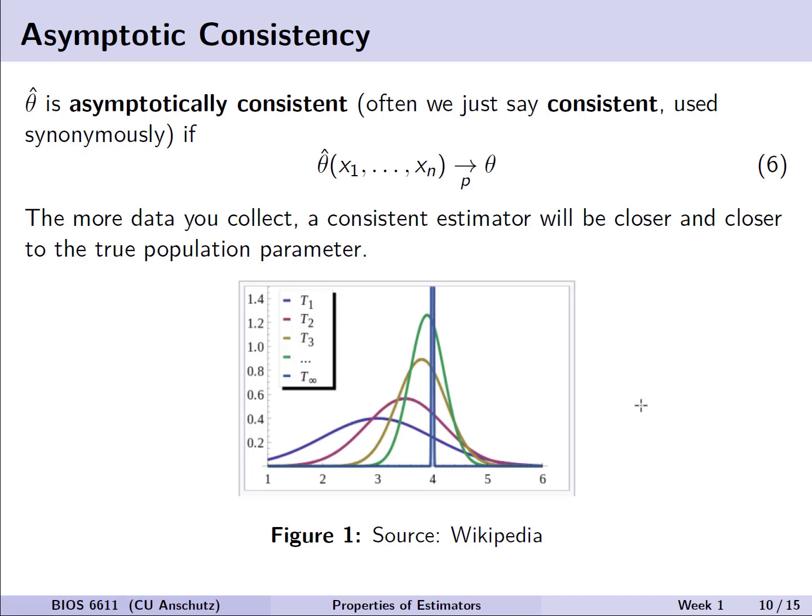Another thing we can think about when we're exploring the properties of our estimators is asymptotic consistency. We see that theta hat is asymptotically consistent, or often we just shorthand that to consistent, if that estimator that we have, that theta hat term, converges in probability to our true estimator theta, that population parameter. Now, again, there's a little more statistical theory that goes into this, so we'll leave it more at the point where we can say that the more data you collect, a consistent estimator will be closer and closer to that true population parameter. For example, there's a graphic from Wikipedia that shows that as we collect more observations in our sequence of estimators, we see that it converges in a case where the truth actually is equal to 4. Once we have infinite observations, we actually are very consistent and we'll always estimate that the value, let's say the mean, is 4. Versus with fewer observations, we have more variability, as we see with these distributions there, with T1, T2, or T3.